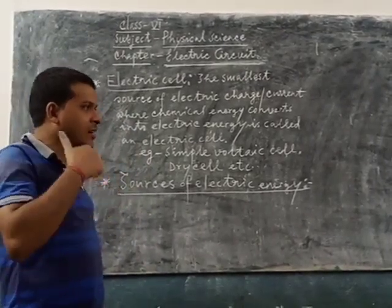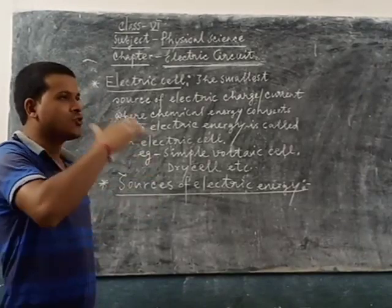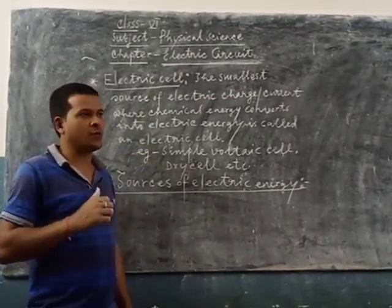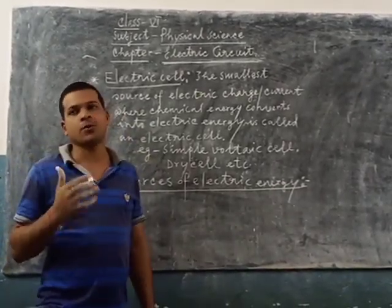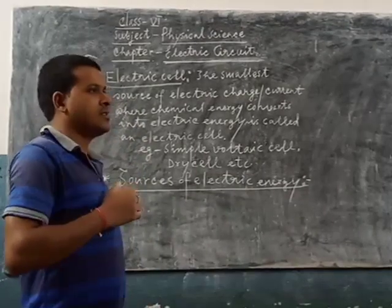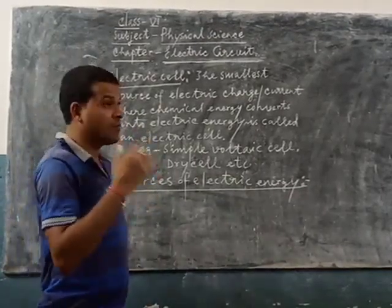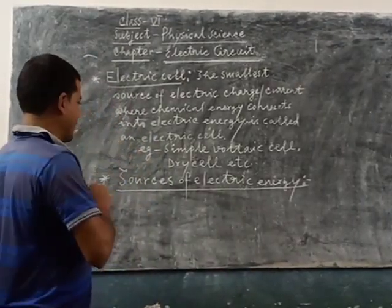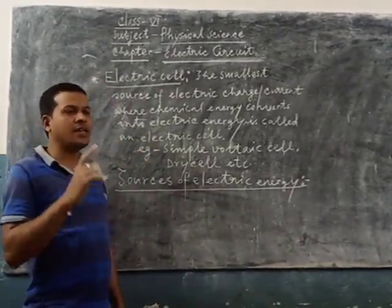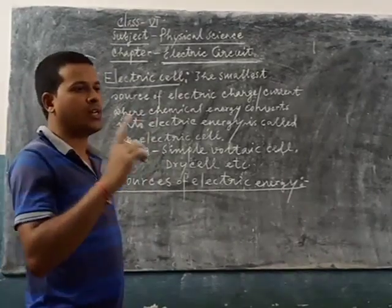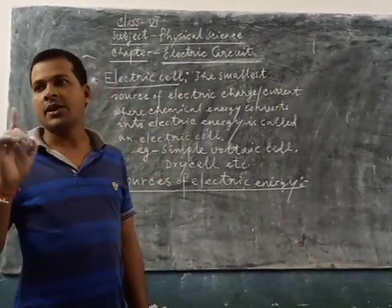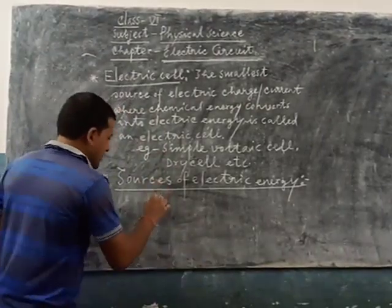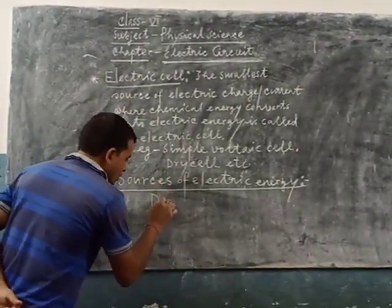Similarly, again to run large electrical devices, we use another type of source of electrical energy, that is called the dynamo or generator, where mechanical energy converts into electrical energy. This is one important source — dynamo.